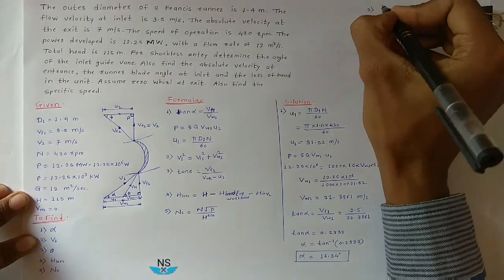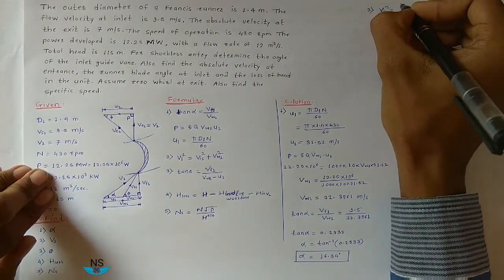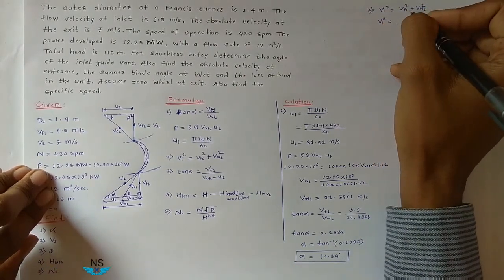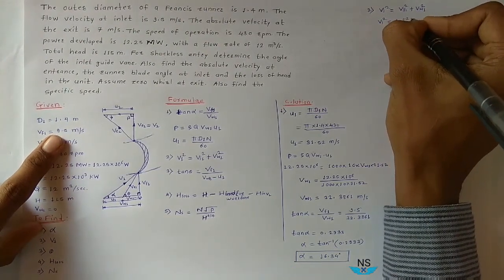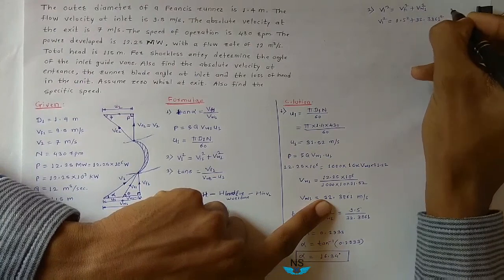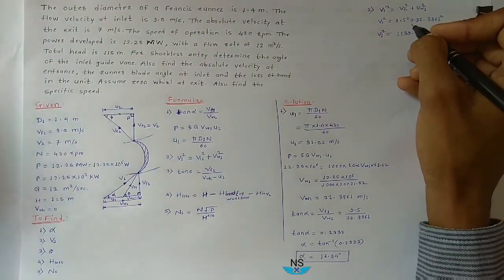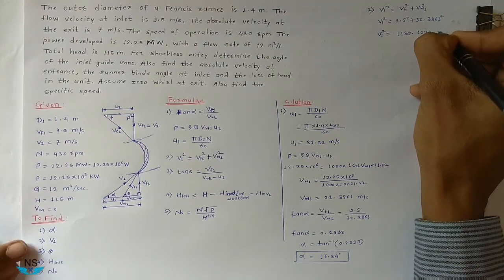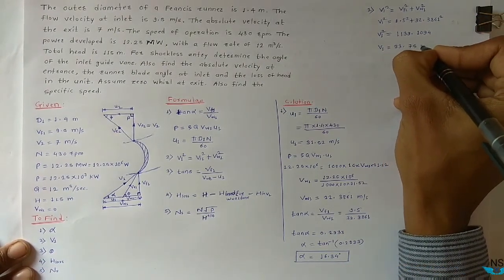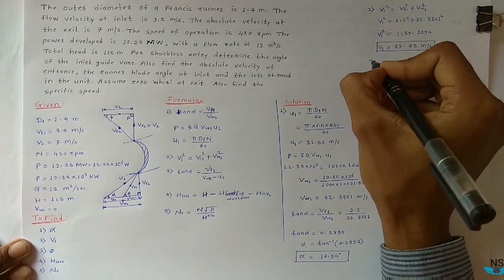Second, find V1. Use Pythagoras theorem for the inlet velocity triangle: V1² = Vf1² + Vw1² = 9.5² + 32.3861² = 1139.10 (approx). Take the square root to get V1 — the Absolute Velocity at Entrance.